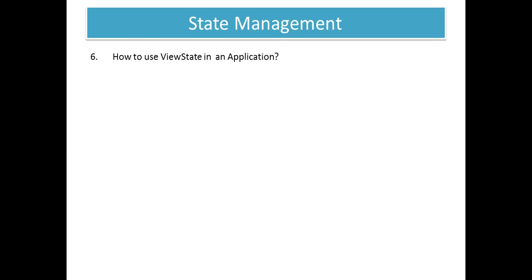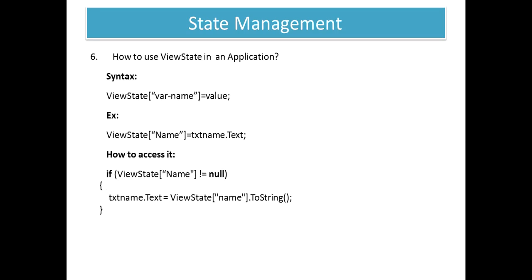Our next question is: how to use view state in an application? The syntax is: ViewState["variableName"] = value. That value can be anything like string, integer, character, or a text box value. For example, ViewState["name"] = txtName.Text. To access view state, in your event just write: if ViewState["variableName"] is not null, then assign that value to your text box.